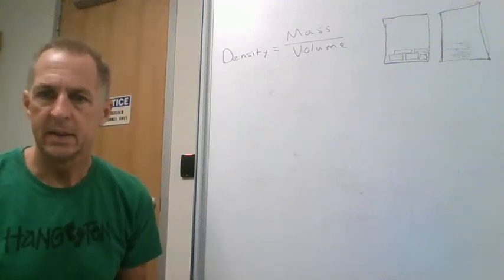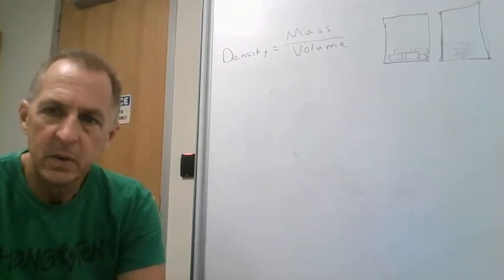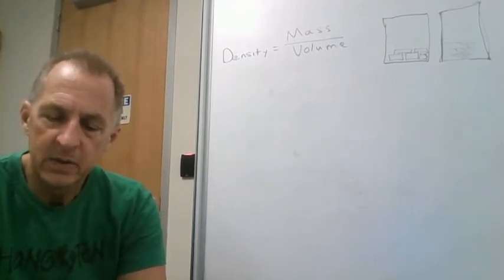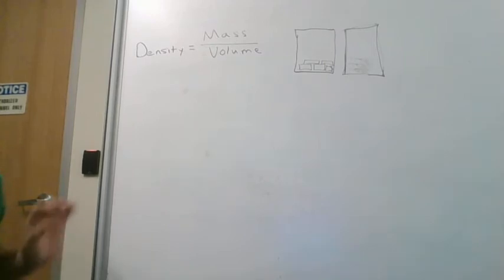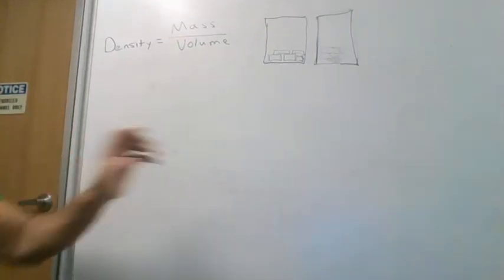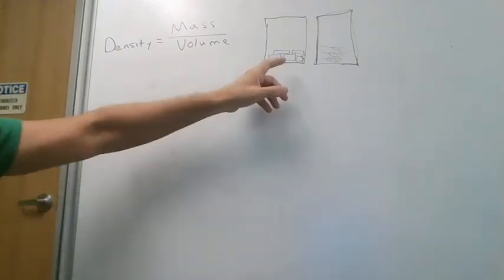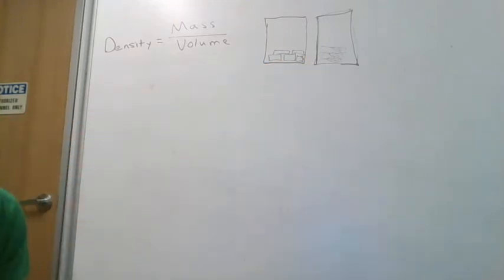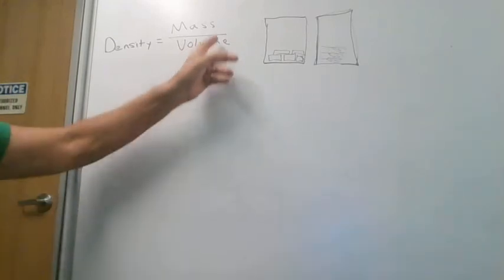Today we're going to talk about density. Density is just a measure of how much material, matter, or mass is packed into a given volume. The density is the mass per volume. If we imagine two buckets that are the same volume — say they're both five-gallon buckets — if we fill one with bricks and one with feathers, the bucket with bricks is going to have a much greater mass because bricks are more dense than feathers. They have more mass per volume.